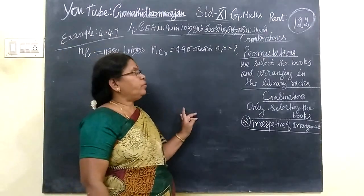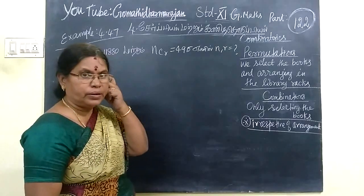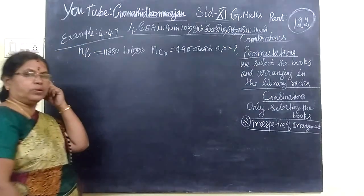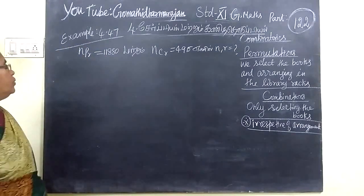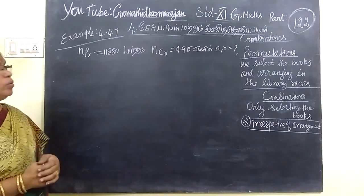So now we will see part 122, standard general method, standard for possible. Example is 4.47.